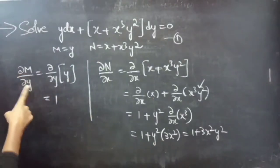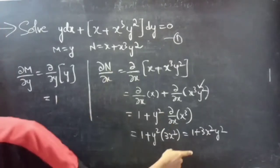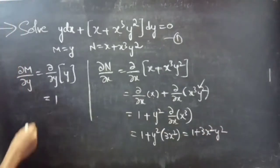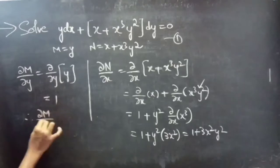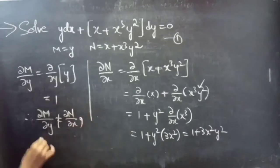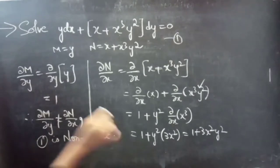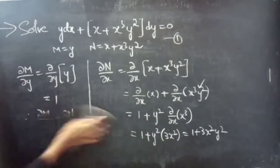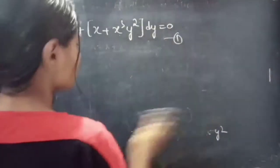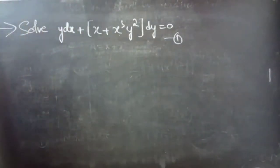It is clear that ∂M/∂y equals 1, which is not equal to ∂N/∂x, since ∂N/∂x equals 1 plus 3x squared y squared. Therefore, ∂M/∂y is not equal to ∂N/∂x, and from this we can say that equation 1 is non-exact. Now, we will reduce the given differential equation to an exact equation using the inspection method with a suitable integrating factor.